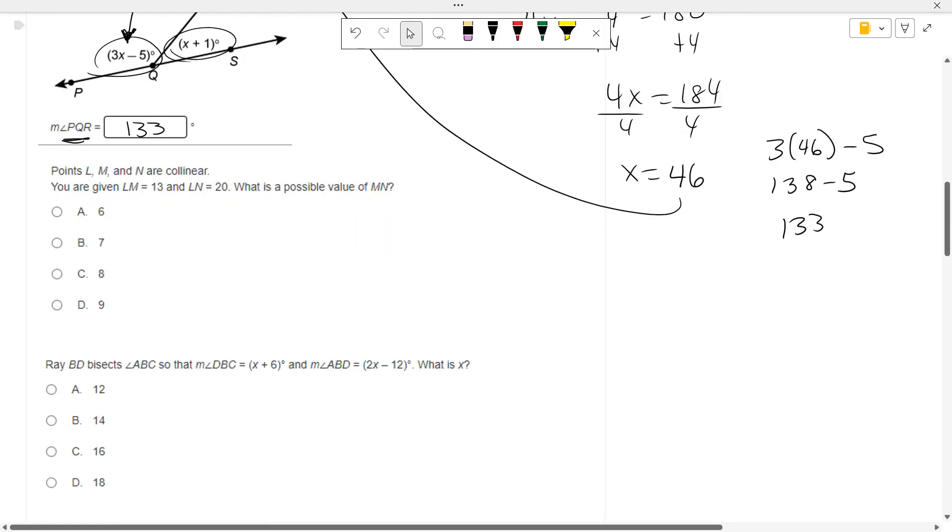Points L, M, and N are collinear. That means they're on the same line. So we go L, M, and N. This is 13. This whole thing is 20. How long is MN? 7.